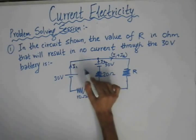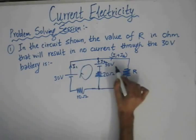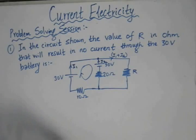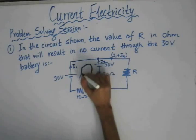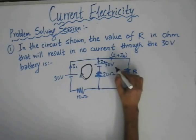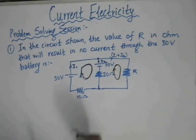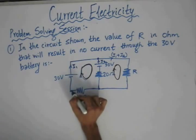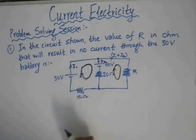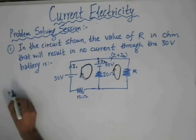Now if we apply KVL to both loops, we consider the direction of the loop as clockwise in both cases. Applying KVL to the first loop, we start from this end. We are moving from the negative terminal to the positive terminal of the battery, so the EMF is positive — we get plus 30.